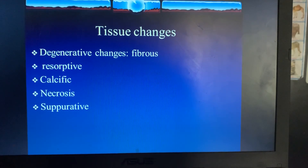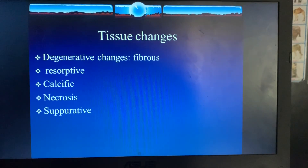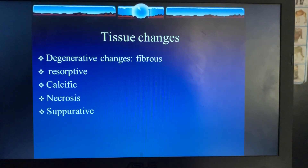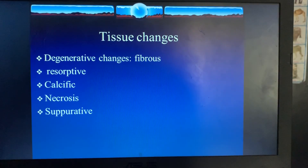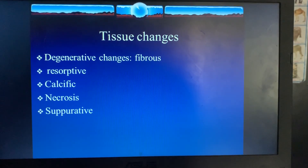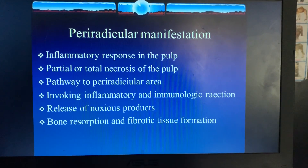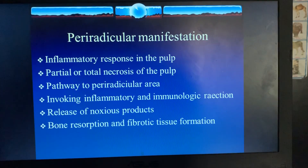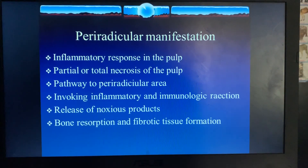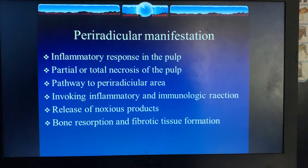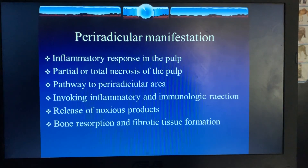After vascular and cellular changes, we have tissue changes. The degenerative changes in the pulp may be seen as fibrous, resorptive, calcific, necrosis, and suppurative changes. Pulpal changes also lead to periradicular changes, and the periradicular manifestation is seen as illustrated in the following flow chart.